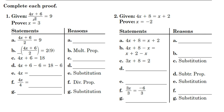On number one here, as you can see, we have 4x plus 6 divided by 2 is equal to 9. We're going to prove that x is in fact 3. Our first statement is rewriting the original problem, what we're given, and that is of course our reason. This is what we are given.